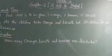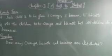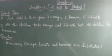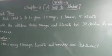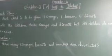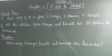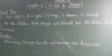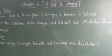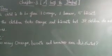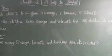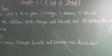Each child is to be given one orange, one banana and five biscuits. So for each child, how many oranges are given? Only one orange, one banana, and biscuits count as five.